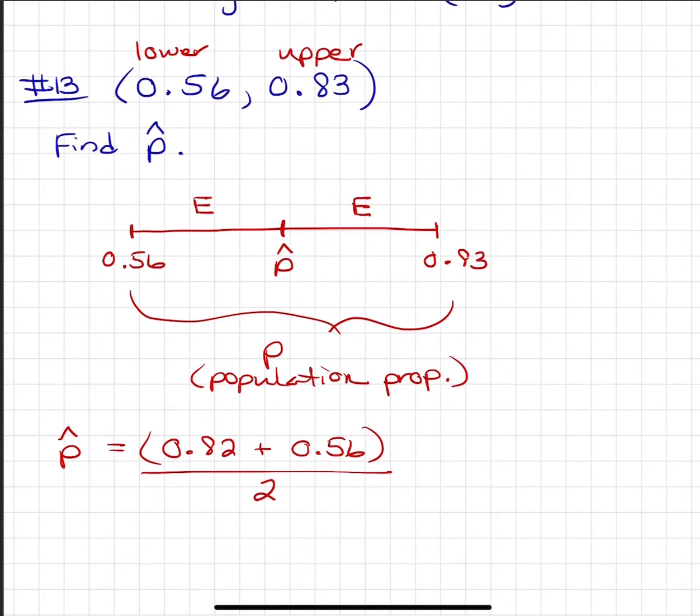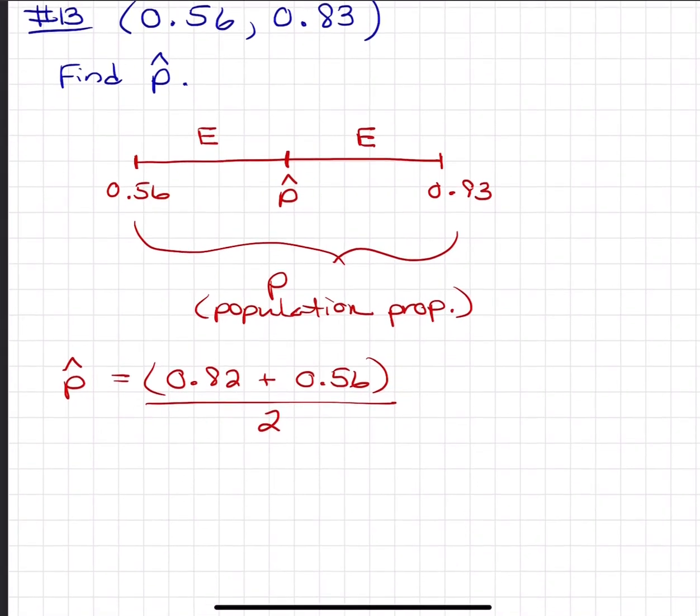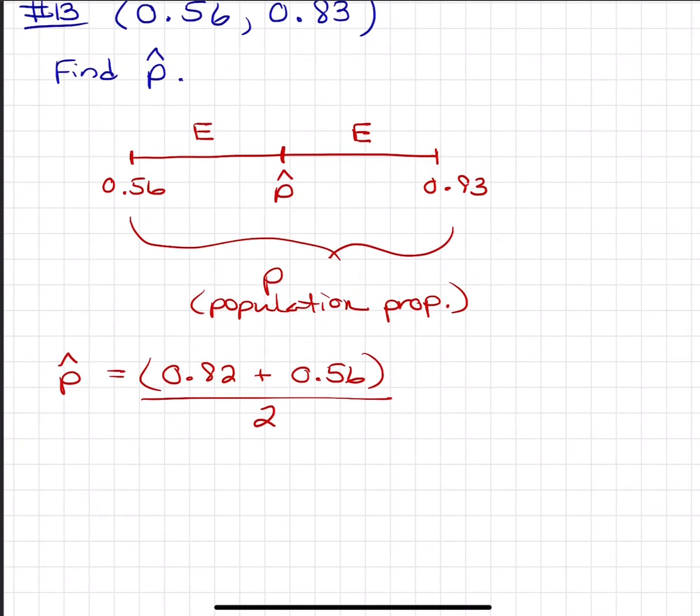Also, I think number 17 on the review, it's different numbers but it's the same concept. If I want you to find the error or the margin of error, that is finding the distance from P hat or the center to each end.